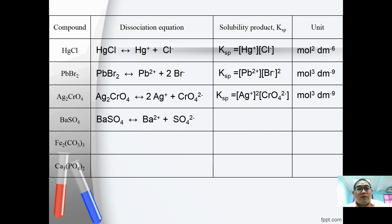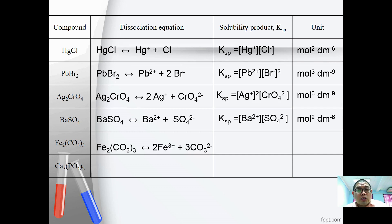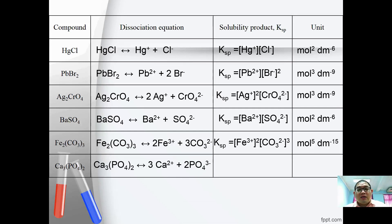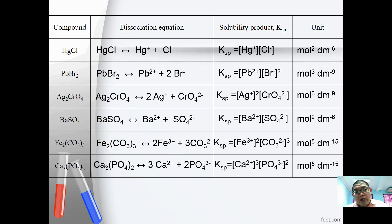Barium sulfate → Ba²⁺ + SO₄²⁻, KSP = [Ba²⁺][SO₄²⁻], unit is mol² dm⁻⁶. Fe₂(CO₃)₃ → 2Fe³⁺ + 3CO₃²⁻, KSP = [Fe³⁺]²[CO₃²⁻]³, unit is mol⁵ dm⁻¹⁵. Ca₃(PO₄)₂ → 3Ca²⁺ + 2PO₄³⁻, KSP is written accordingly and the unit is also mol⁵ dm⁻¹⁵.